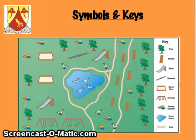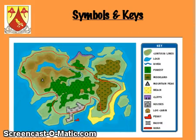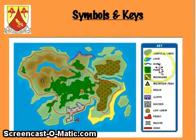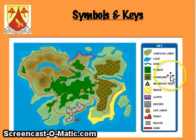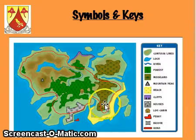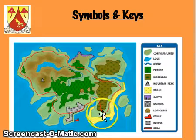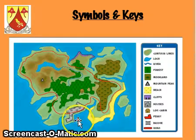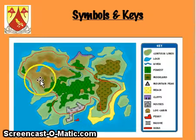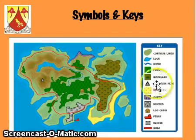Now it's fairly obvious on this map because we can see that it looks like a tree. But if we look at the second map, it's just green. And we need the key to tell us that those green spots are the forest, and that the brown with the green little bushes are moorland. Then if we look at this little triangle — that's the symbol — and we need the key to unlock what it means, and it tells us that that's the mountain peak.